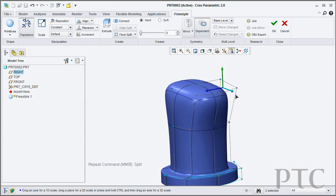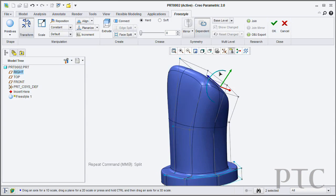Creo Parametric introduces new capabilities for freeform surface design in the form of Freestyle. Freestyle comes as standard with all seats of Creo Parametric.